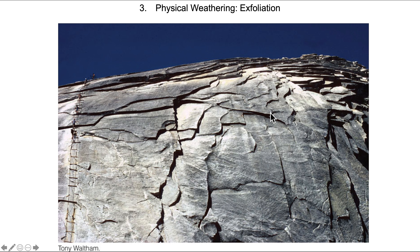Here we have another famous image of exfoliation — Half Dome in Yosemite. What we see is granite peeling away like layers of an onion. This rock solidified at significant depth under great pressure, and once that pressure was released, the rock began to expand, coming into equilibrium with the lower pressures observed at the Earth's surface compared to deep below where the Sierra Nevada mountains are today.